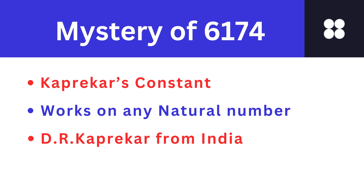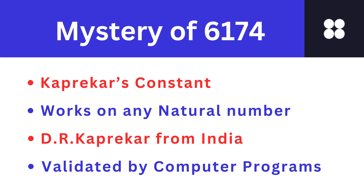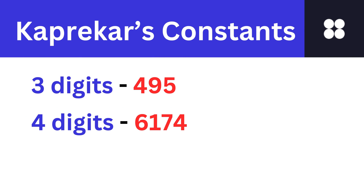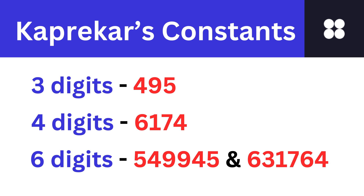In 1955, Kaprekar published this surprising result concerning what is now known as Kaprekar's routine. The routine is simple but uncovers a fascinating result, and its application to any natural number showcases its universal appeal. Computer programs have been written to verify the validity of this iteration for all four-digit numbers, and it holds good for all four-digit numbers having at least two different digits. Applied to three-digit numbers, it converges to another magical constant: 495. For six-digit numbers, the Kaprekar's constants are 549945 and 631764.